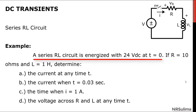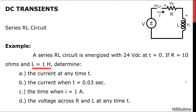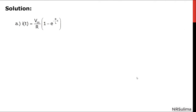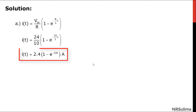Example: a series RL circuit is energized with 24 Vdc at time equal to zero. If R is equal to 10 ohms and L equal to 1 Henry, for letter A, the current at any time t is given by I of t equals V over R times 1 minus exponential negative R over L times t. Substituting the values, the final answer is 2.4 times the quantity 1 minus exponential negative 10t amperes. This equation is represented by this graph.